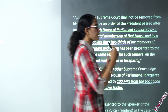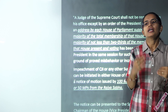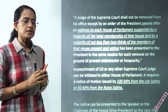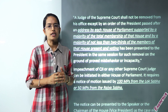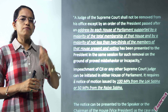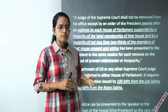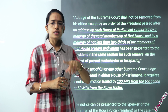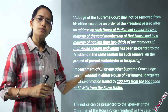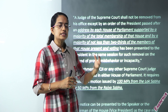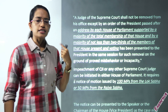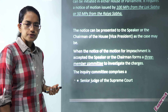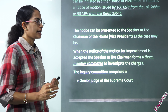How can an impeachment motion be brought into the house? An impeachment motion can be brought only with the acceptance of 100 members of parliament in the case of Lok Sabha and 50 members in the case of Rajya Sabha. It is the ex-officio chairman of Rajya Sabha or the speaker of Lok Sabha who decides that the impeachment motion should be brought into the house.